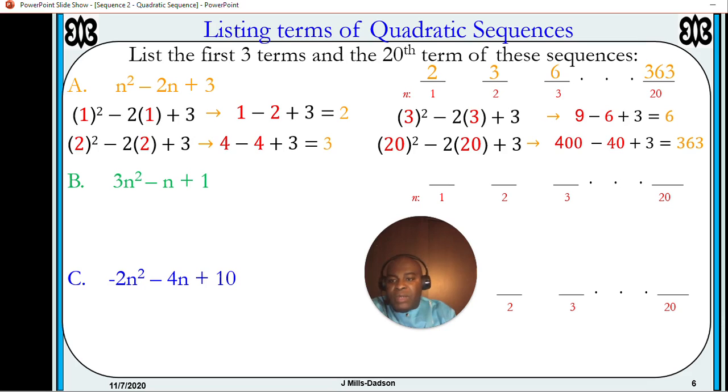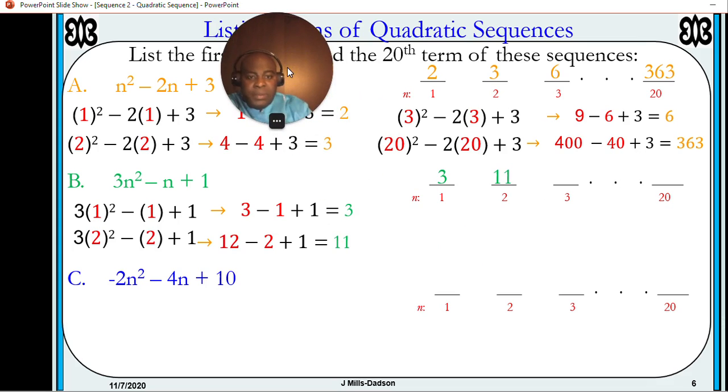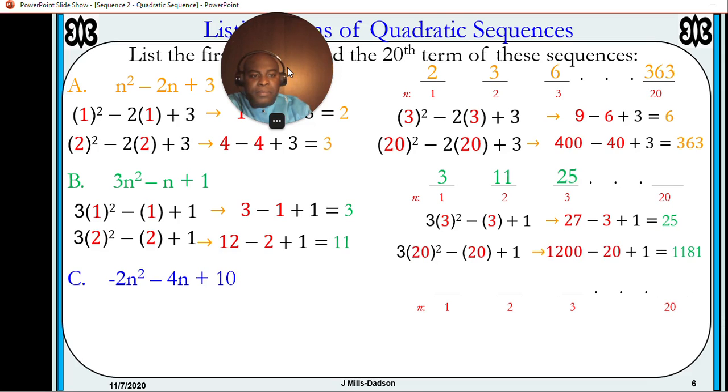Let's look at the second one. Substituting 1, we get positive 3. Substituting 2, we get 11. Using 3, we get 25. Then we're going to substitute 20. 1,181.